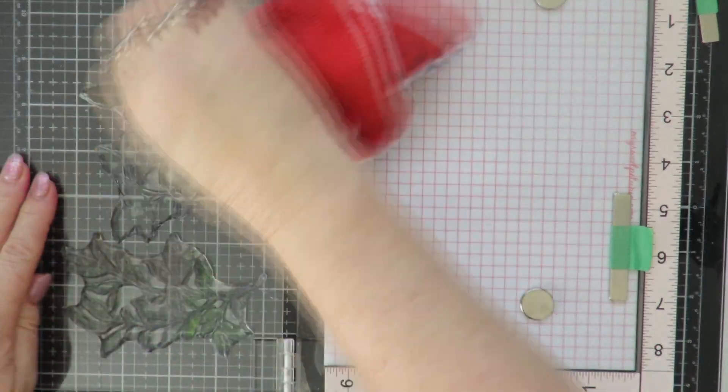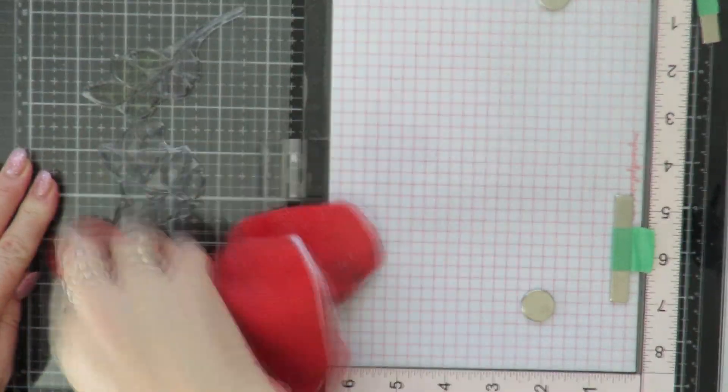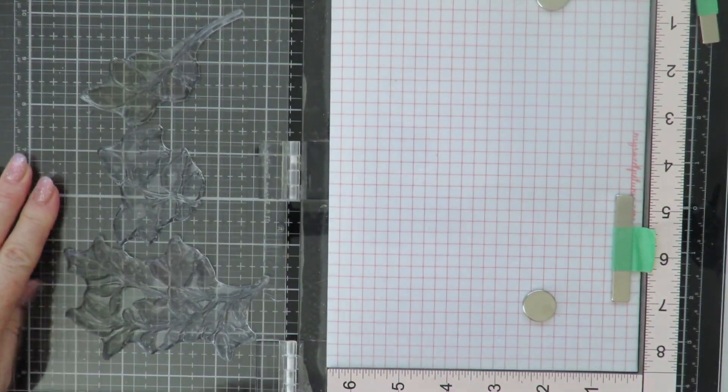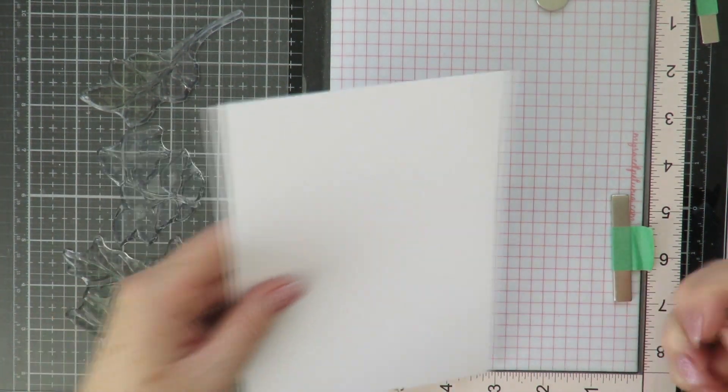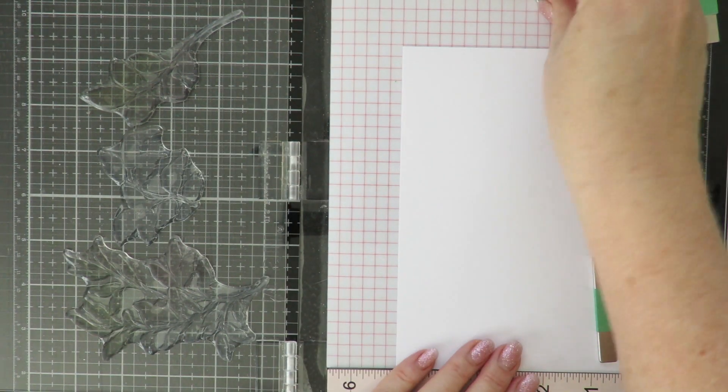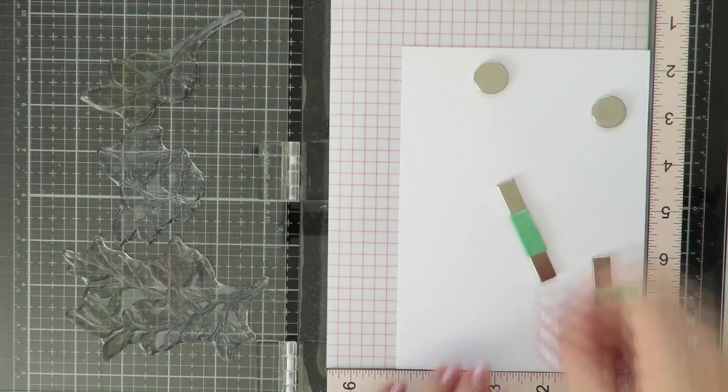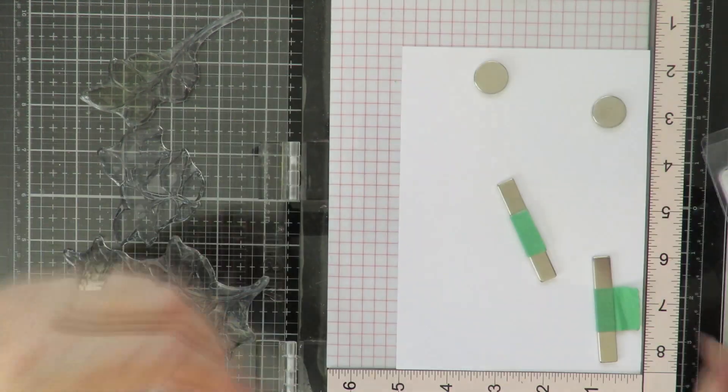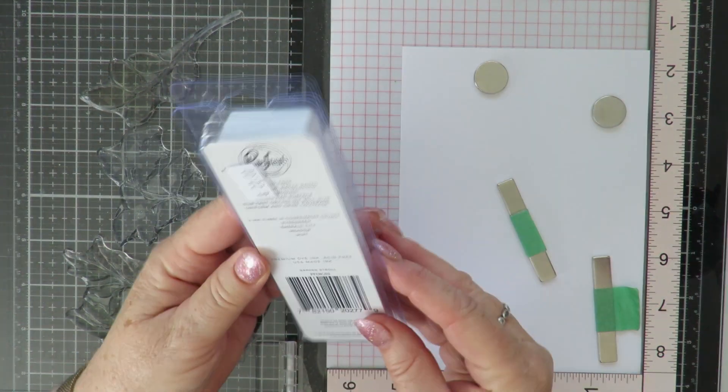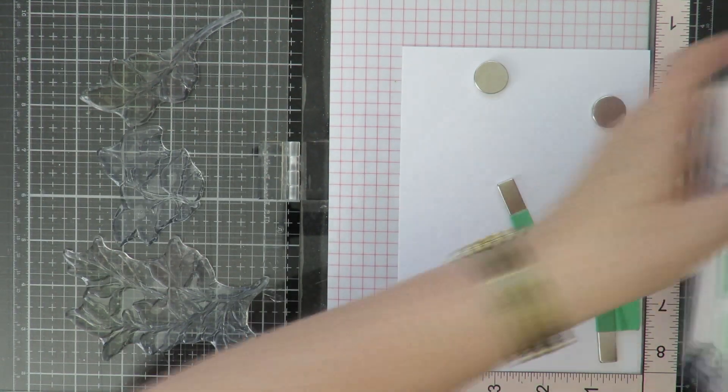While I've got the stamps in the MISTI, I'm just going to do another color variation as my base layer. I'm going to use the Pinkfresh Studios, I think it's called Garden Valley or Garden Stroll, and I'm going to just do the lightest color which is Mint for that color variation.